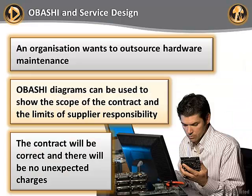Imagine an organization that wants to outsource its hardware maintenance. Using Obashi diagrams, they can quickly and easily identify what components need to be part of the new contract and show the supplier the limit of their responsibility. Without clear information, the contract might be drawn up incorrectly and extra charges might be added later when more hardware is discovered.